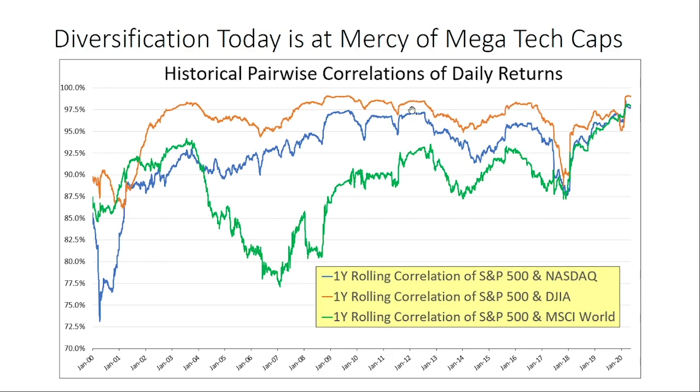If we look at the brown line today and compare that to history, the correlation between the S&P 500 and the Dow Jones Industrial Average is at 99% — and it's the highest it's ever been for the last 20 years. Both the NASDAQ and MSCI World correlations are also at the highest they've ever been.